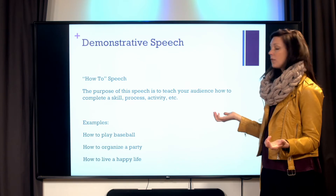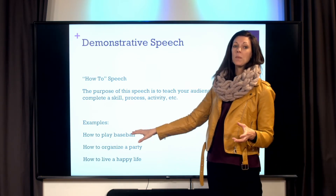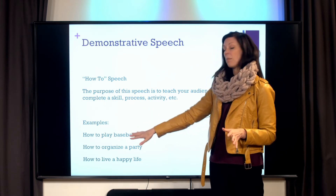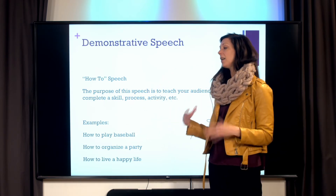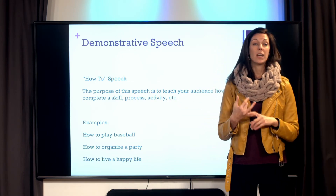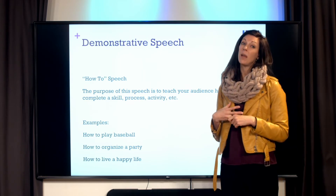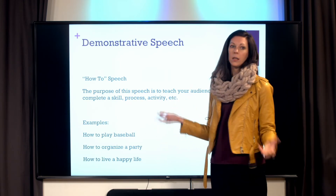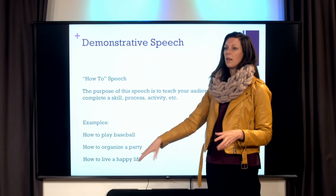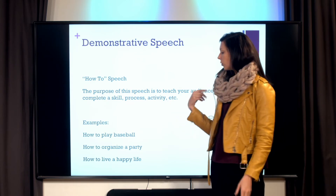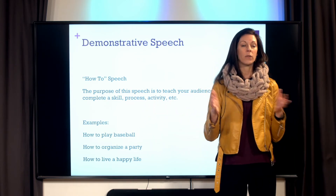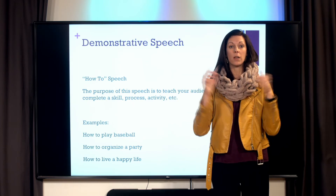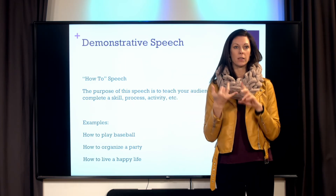Some examples of topics I typically see for this assignment: how to play a sport, like how to play baseball — that would be easy to demonstrate, though a sport is quite complex. You could narrow it down to something like how to hit a baseball. How to organize a party is another example. Also think about topics that might not be your typical how-to — I've seen students do things like how to have a happy life, talking about three things one would do to achieve that. Anything you can put 'how to' in front of is an option, as long as it's class appropriate and fits in five to seven minutes.